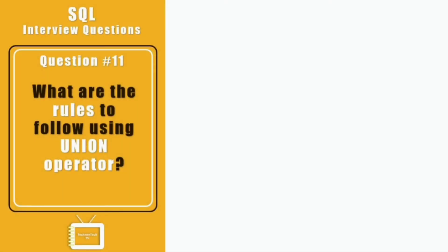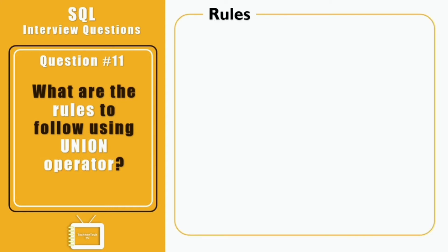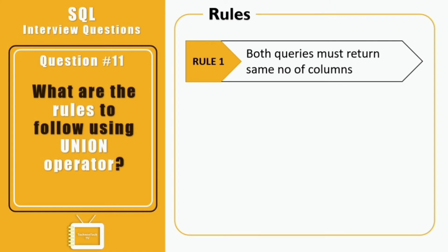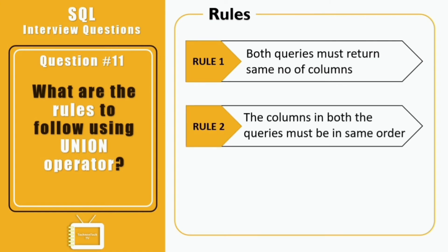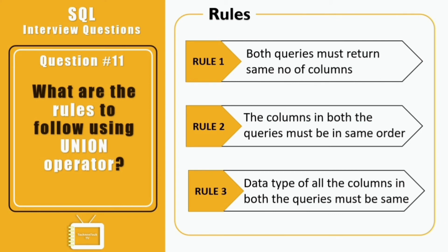Question eleven: what are the rules to follow when using the UNION operator? UNION combines two different SQL queries, with the output being the combined result from both. You can combine two queries using UNION if they follow three rules: first, both queries must return the same number of columns; second, the columns in both queries must be in the same order; third, the data types of all columns in both queries must be the same.